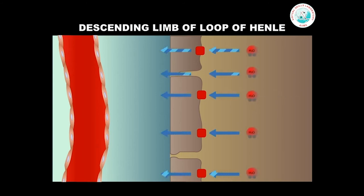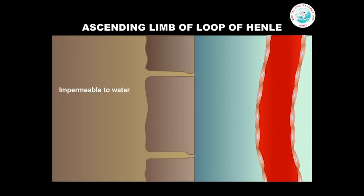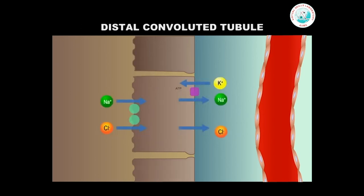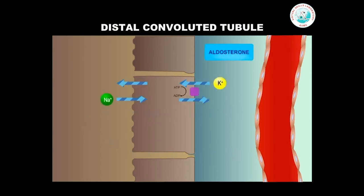The thin descending limb is freely permeable to water due to the presence of aquaporins but not to solutes, so passive transport of water occurs. The ascending limb is impermeable to water because of lack of aquaporins, but reabsorbs around 25% of the filtered sodium chloride actively. In the distal convoluted tubule, around 5% of the sodium chloride is reabsorbed actively using sodium chloride symporters, accompanied by reabsorption of water via osmosis.